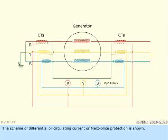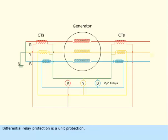The scheme of differential or circulating current or Merz-Price protection is shown. Differential relay protection is a unit protection. This means that the protected zone or portion of the equipment is confined to a boundary.